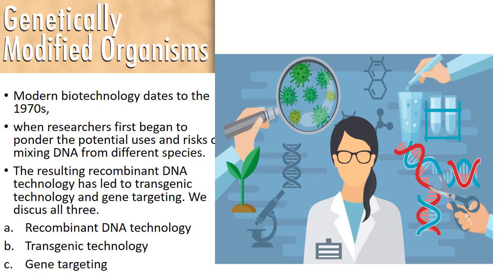In the 1970s, researchers took DNA from different sources, mixed them, and studied what harmful and beneficial aspects could happen. During these experiments, recombinant DNA technology was used, and with it, other biotechnology fields were merged: transgenic technology and gene targeting.